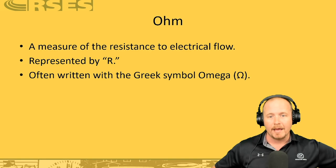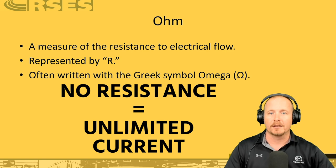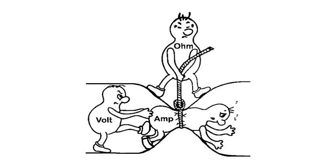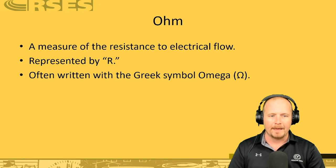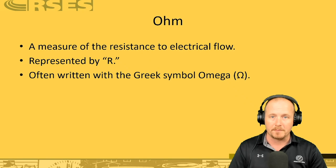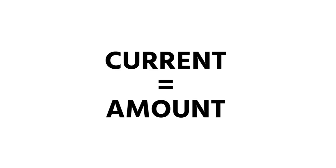With no resistance, we have unlimited current. The more resistance increases, the lower the current. When we increase resistance in a circuit, we decrease current — so long as the voltage remains the same. If we increase voltage and resistance stays the same, then we increase the current. So: current is the amount, voltage is the force, and ohms is the resistance against.